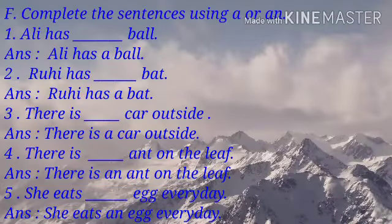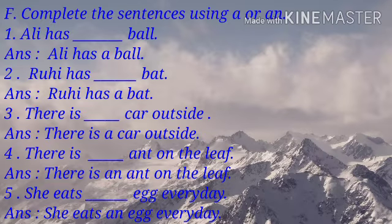Exercise F. Complete the sentences using A or AN. Number 1, Ali has dash ball — answer: Ali has a ball. Number 2, Rohi has dash bat — answer: Rohi has a bat. Number 3, there is dash car outside — answer: there is a car outside.